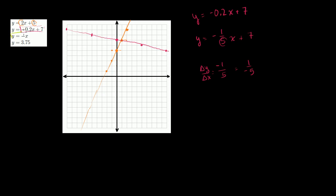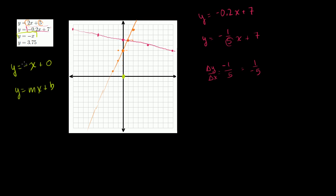Now y is equal to negative x. Where is the b term? Well, b is 0 — you can view this as negative 1x plus 0. So the y-intercept is at the origin: when x is 0, y is 0. The slope is negative 1, meaning when you move right by 1 in x, you go down by 1 in y. x and y have opposite signs and go in opposite directions, so the line splits the second and fourth quadrants.